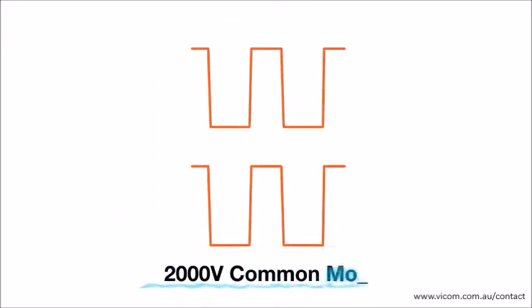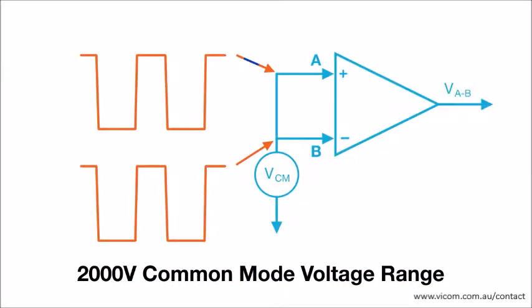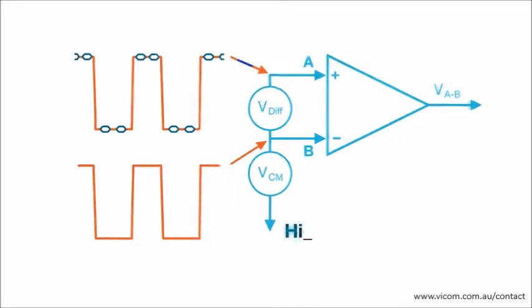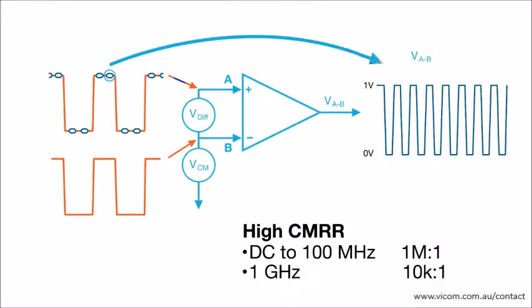ISOVUE enables floating measurements 2000 volts above ground. ISOVUE's complete isolation provides 1 million to 1 common mode rejection ratio allowing you to see only the signals that are important.